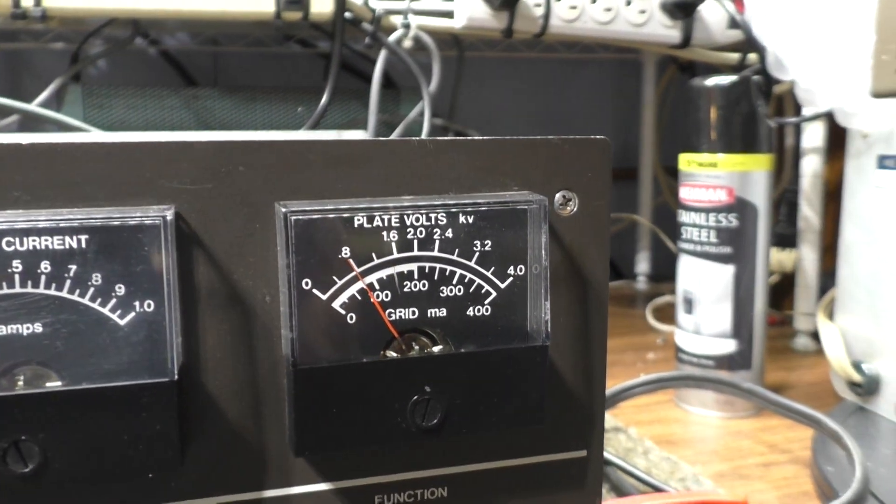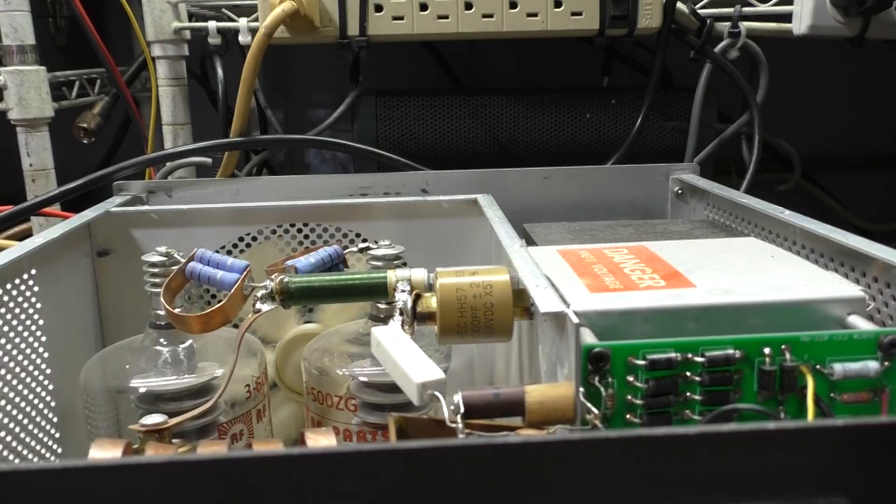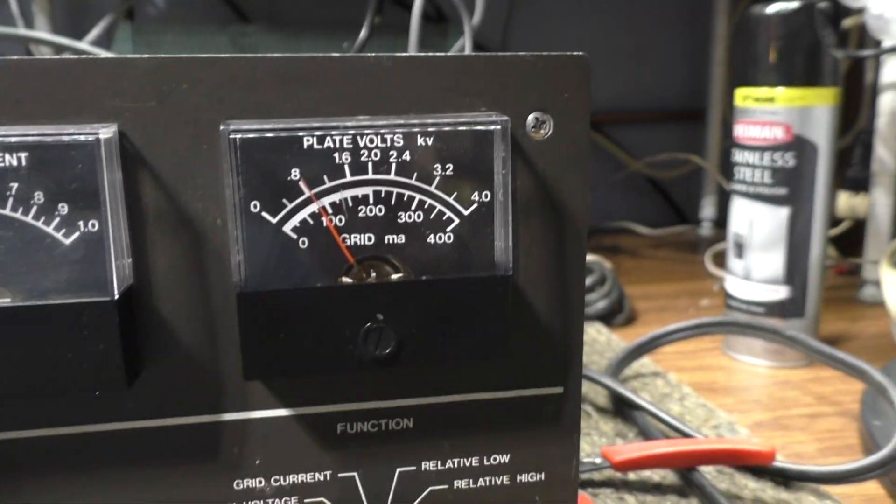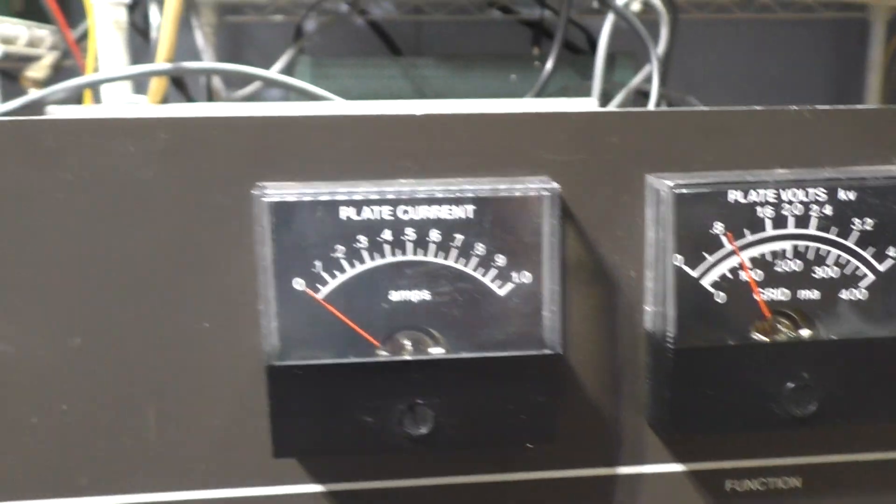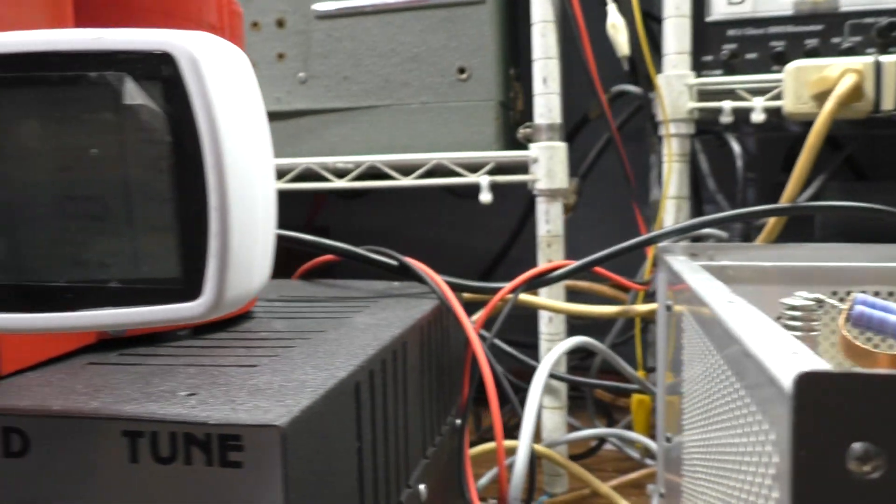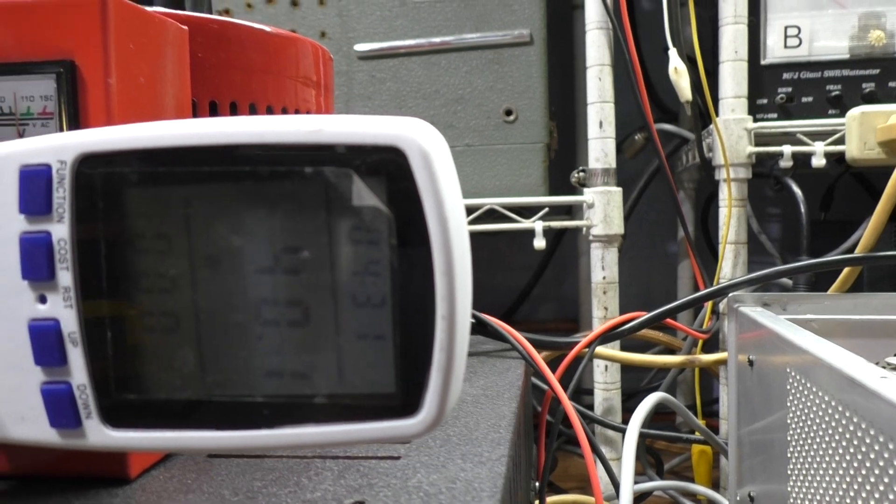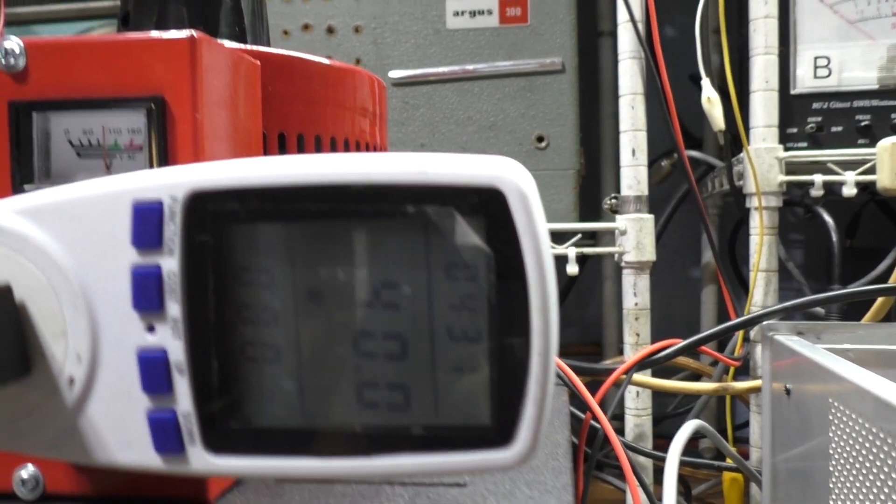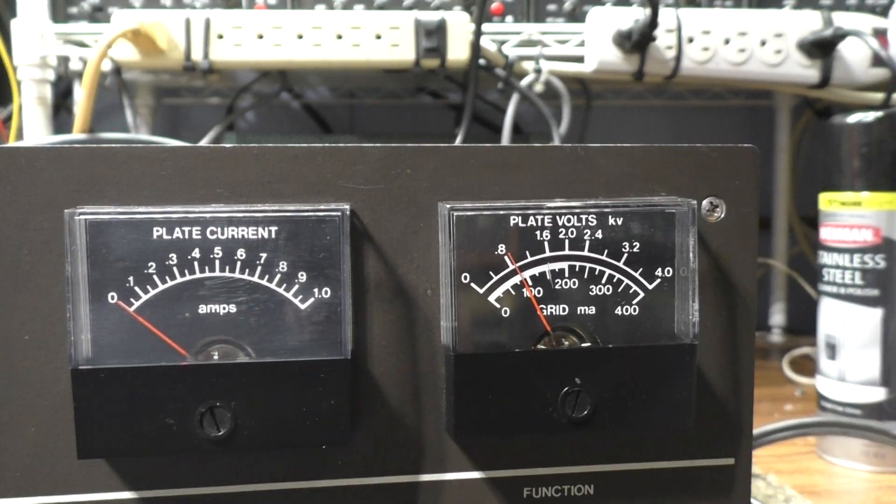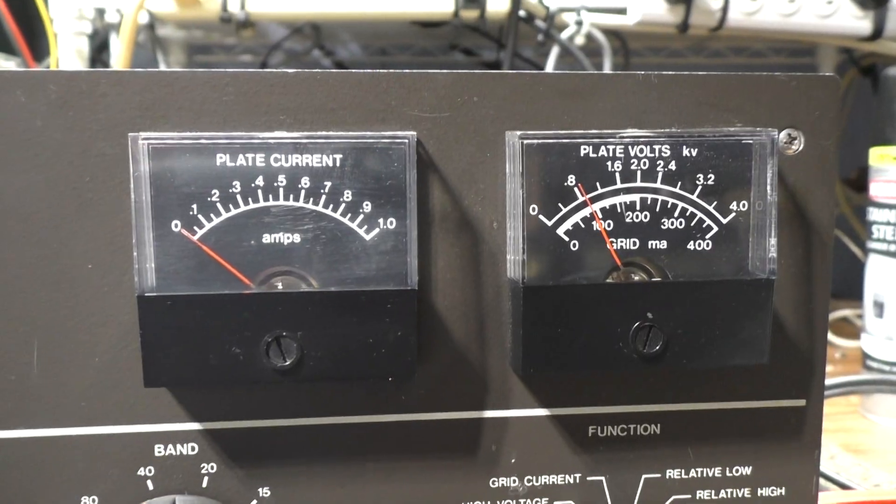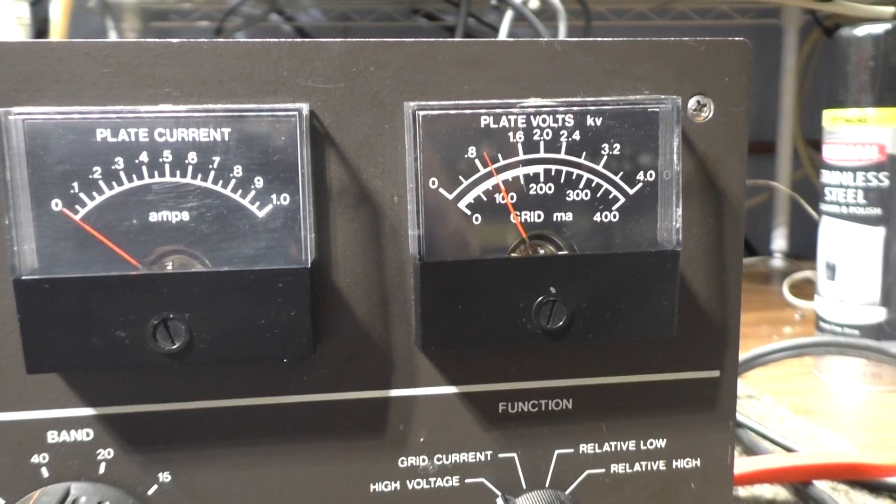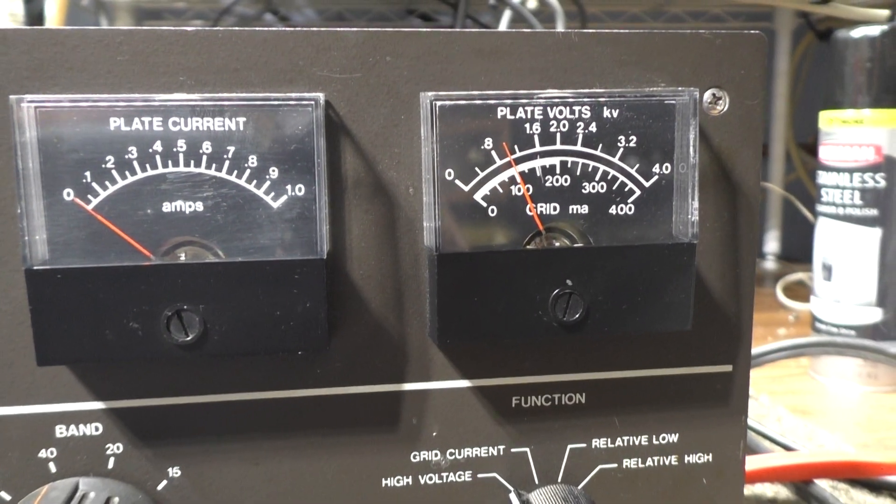We're going to slowly dial her up. Fan's starting to kick in. Plate current meter here ain't going crazy, so that's an indication the tubes haven't shorted yet. But the more voltage you put on it, the more of an indication of whether them tubes are shorted if you stick a lot of voltage on them. Still dialing it up.